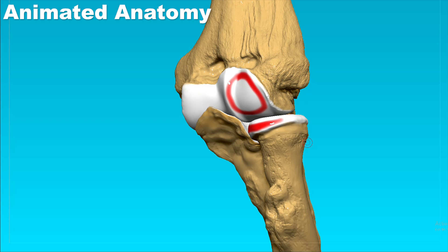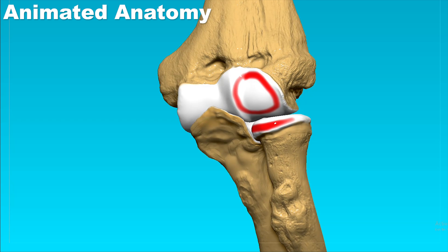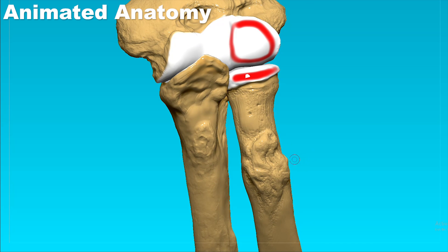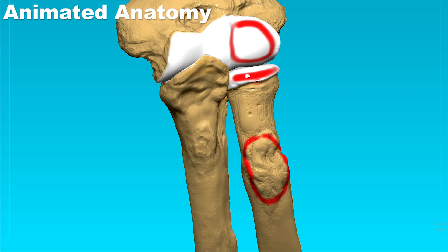Bringing back the radius, we can see this part, which is the constriction called the neck. Going a little more distally, we can see the radial tuberosity — that is where the biceps muscle inserts, which we will see shortly after explaining the bones.